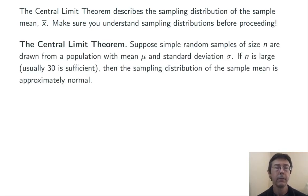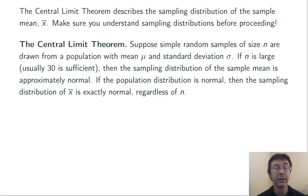So here's the CLT. We're imagining that we're taking simple random samples of size n from some population with mean μ and standard deviation σ. We don't necessarily know anything else about the shape of that population. But if n is large, and 30 is usually sufficient, then the sampling distribution of the sample mean has approximately a normal shape. If you're sampling from a population that is itself normal, then the sampling distribution of x-bar is exactly normal, regardless of how large n is.